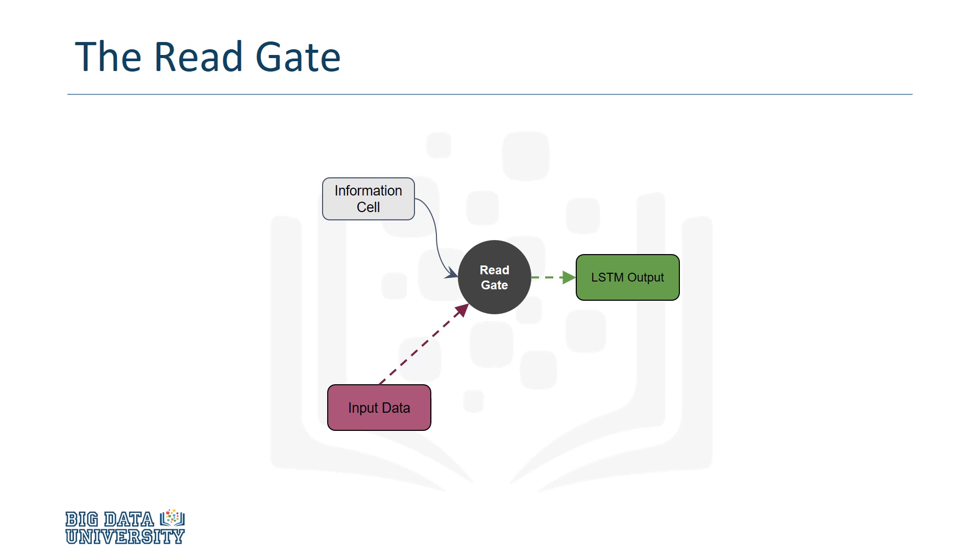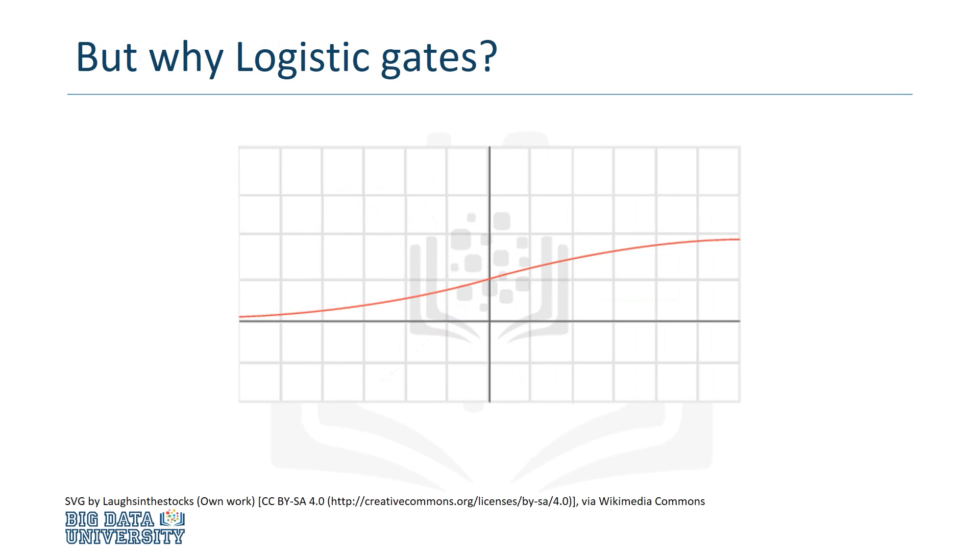But you might be wondering why the LSTM uses logistic gates. The reason is that logistic-based functions have very nice derivatives. As a result, we can back-propagate through the gates, which enables the recurrent net to understand how to utilize the LSTM structure. But the details of this process are beyond the scope of this video.